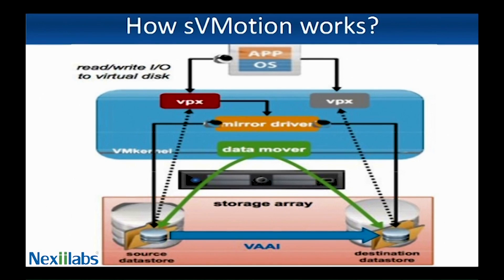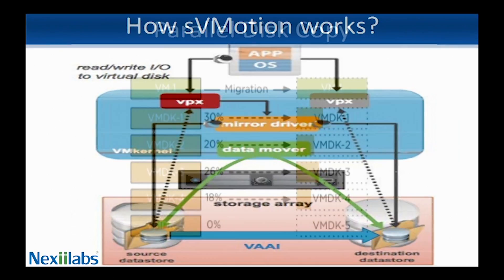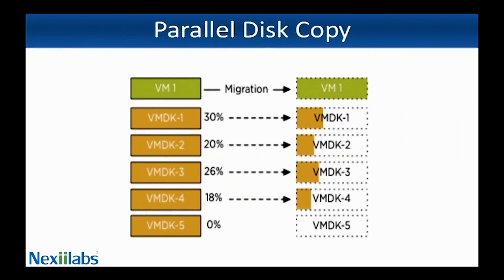Storage vMotion invokes a fast suspend and resume of the virtual machine to transfer control over to the idling shadow virtual machine on the destination datastore. After the fast suspend and resume completes, the old home directory and VM disk files are deleted from the source datastore. The datastore migration has now been completed.